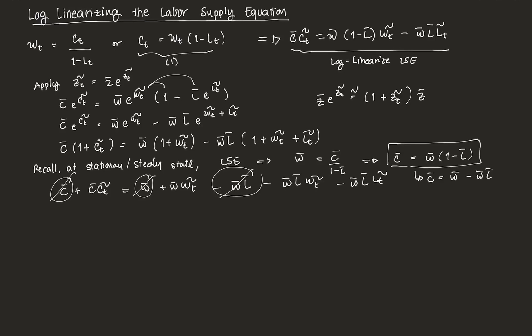And you're going to be left with C bar Ct tilde is equal to W bar Wt tilde minus W bar L bar Wt tilde minus W bar L bar Lt tilde. Then all that's left for us to get our log linearized labor supply equation is to rearrange.